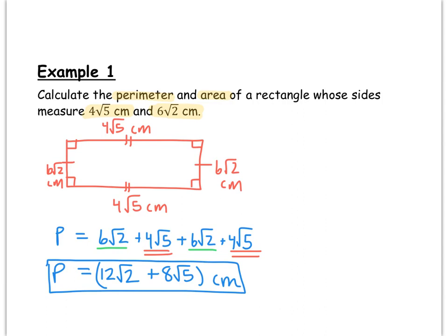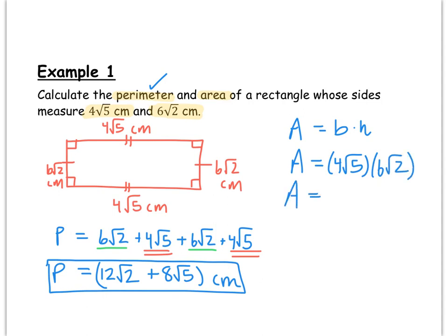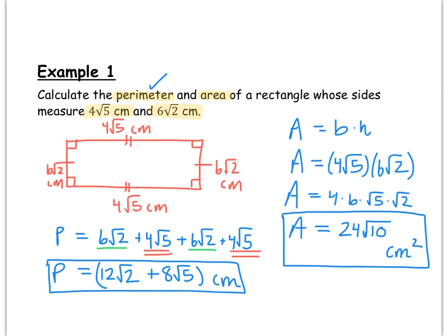Now let's find the area. The area of a rectangle is base times height, and for this rectangle the base and height are 4√5 and 6√2. We multiply: 4 × √5 × 6 × √2. Regrouping as 4 × 6 × √5 × √2, we get 24 × √10. So the area is 24√10 square centimeters. We can stop there, since √10 cannot be simplified — there are no perfect square factors of 10.